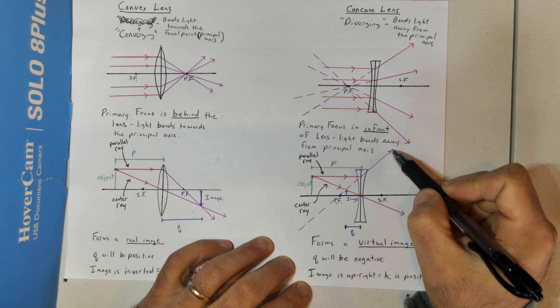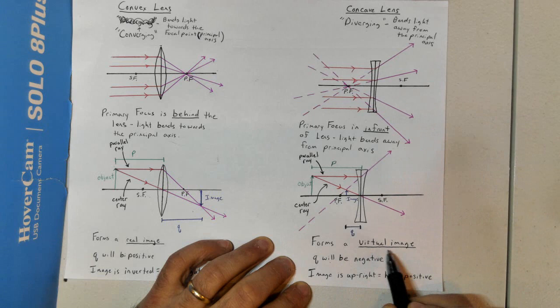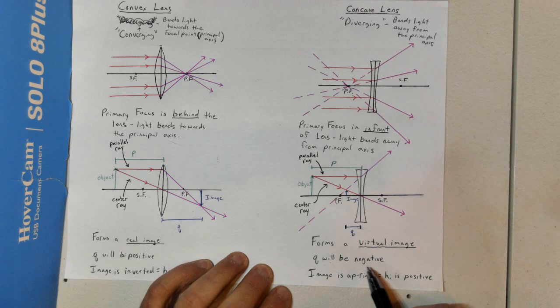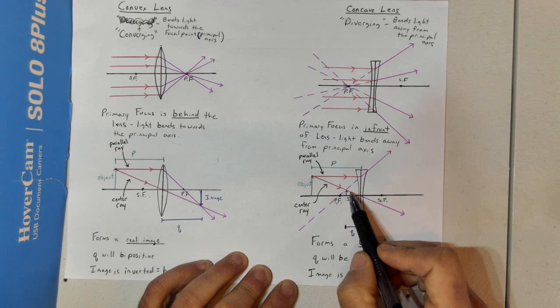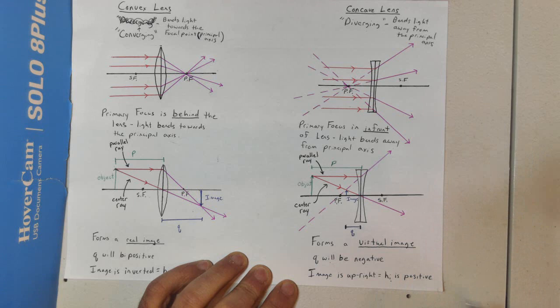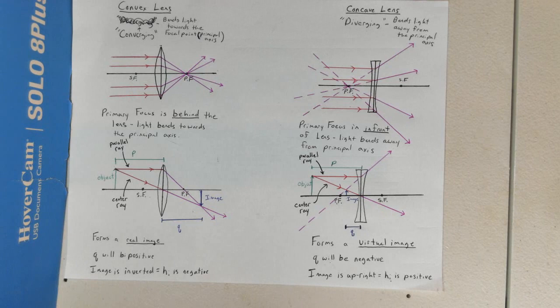If our eyes were right here, we would see that the light ray came from this point, and we'd assume it follows that same path. So our image is formed here — a virtual image. In this case, Q will be negative, because the image is on the left side of the lens — light is expected to pass through, but the image is on the same side as the object. The image is upright, so the height of the image, HI, is positive.